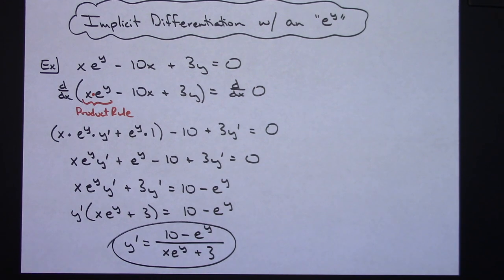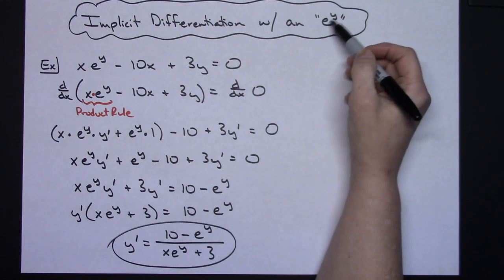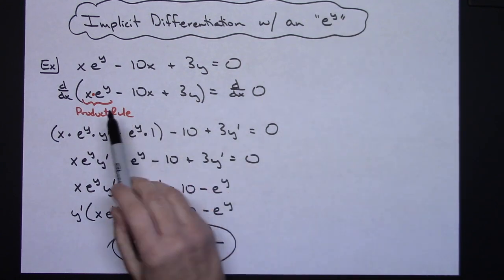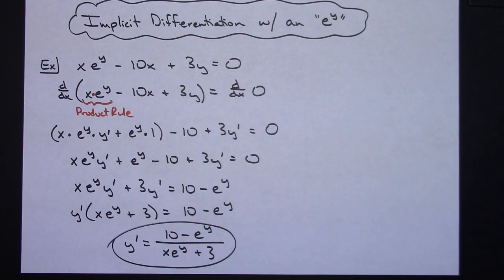Just one straightforward example of implicit differentiation with a transcendental function — e to the y — while also implementing the product rule.